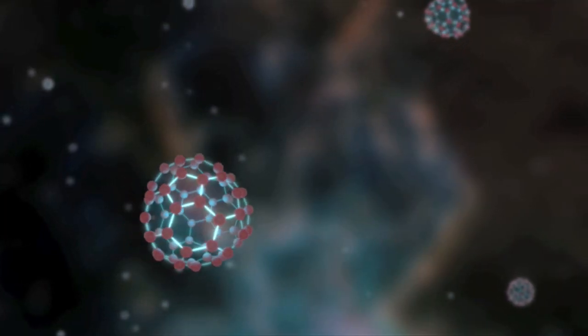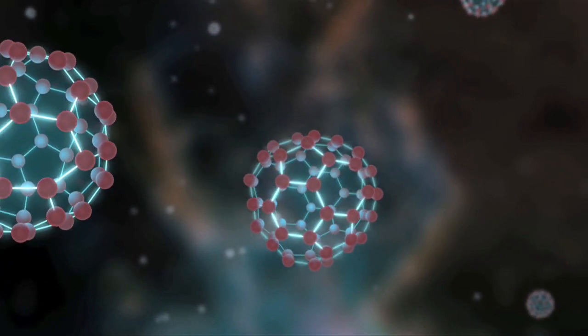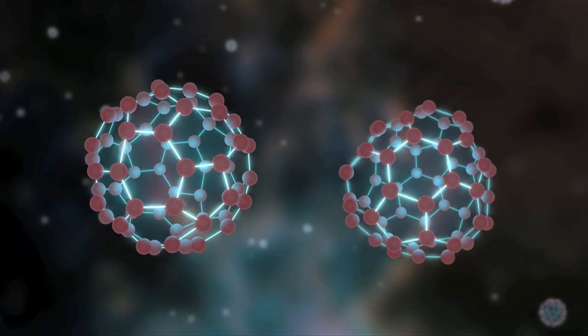We can detect Buckyballs in space through their vibrational motions. These Buckyballs oscillate or vibrate in very different ways, and each way they vibrate corresponds to a very specific color of infrared light that they emit or absorb.